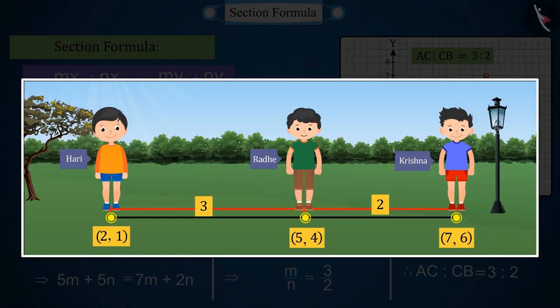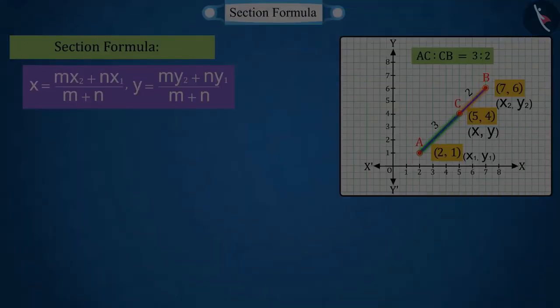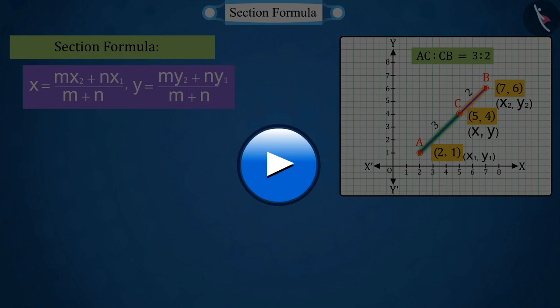So we can say that Radhe is standing at a distance of 3 is to 2 ratio from both friends. Pause the video and taking the Y value of the section formula, try solving the question.